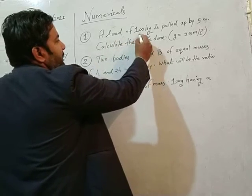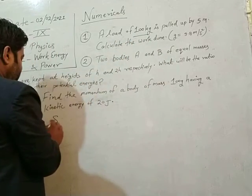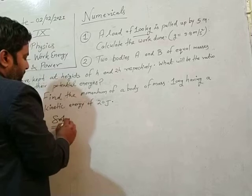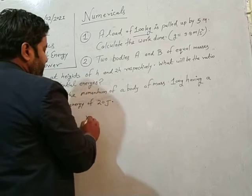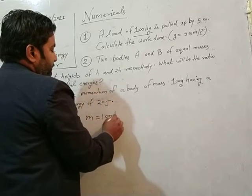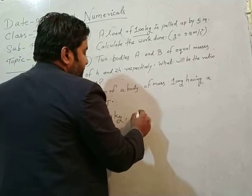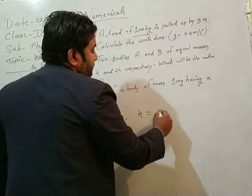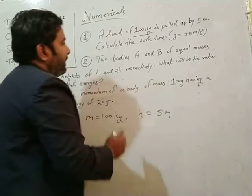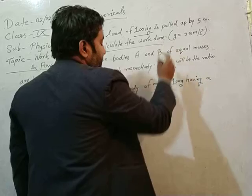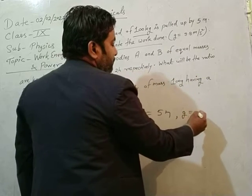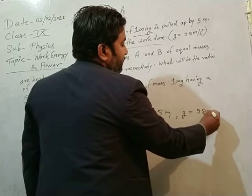Let's see the concept of the numerical. What is given? A load of 100 kg, that is m equal to 100 kg, is pulled up. It means that is the height, 5 meters. And we have to calculate the work done. Gravity, that is g equal to 9.8 meter per second square.